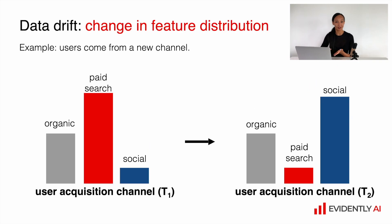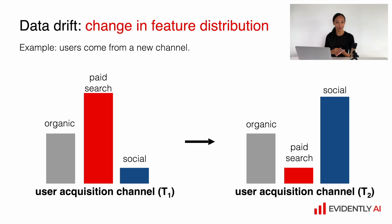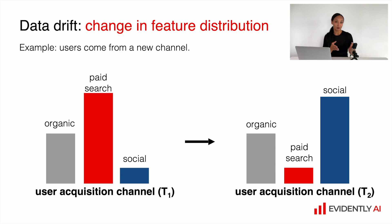Together with concept drift we might face data drift. This is the case when we observe changes in the input features. For example, let's say we have a model which relies on user data, and after a very successful marketing campaign we recently got quite a lot of new users coming from social networks and much fewer users coming from paid search. In this case, if the two segments are quite different, we might face some model degradation because the model never saw users from social networks during training and it needs to learn the right patterns.